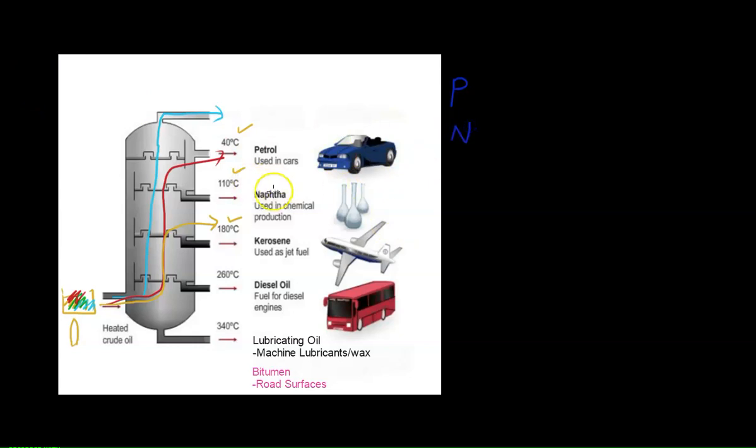Naphtha is used in chemical production. It's the precursor, the ingredient to make things like plastic, rubber - synthetic rubber in this case - detergent, and even medication like the Panadol that you sometimes take. All these things may seem worlds apart but they all require naphtha to synthesize them.